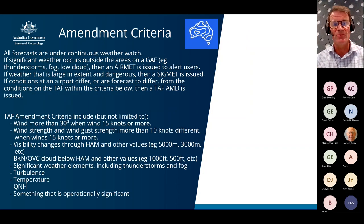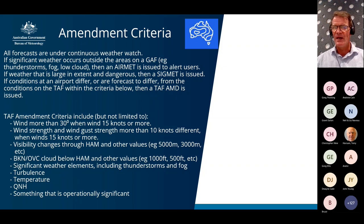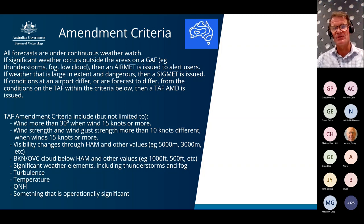As a shift rolls on and we continue monitoring weather coming in, we can amend or change the forecast based on what we're seeing, particularly if it falls outside what we were expecting. If we get thunderstorms or extensive areas of low visibility or lower cloud falling outside of what we've forecast on the GAFF, we issue an AIRMET to alert users. If the weather is large in extent and dangerous, a SIGMET is issued for large areas of thunderstorms, severe turbulence, or severe icing.